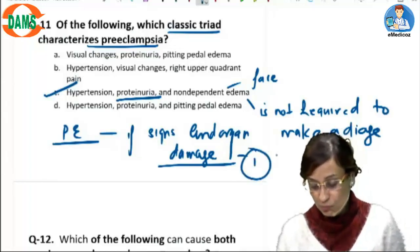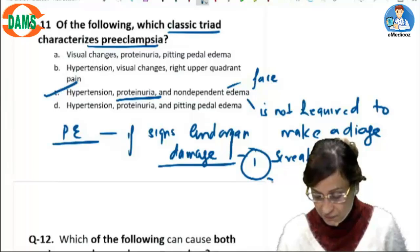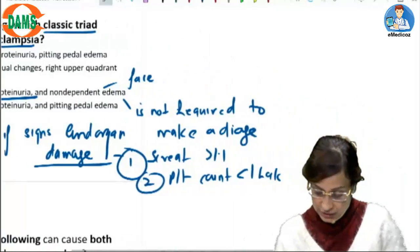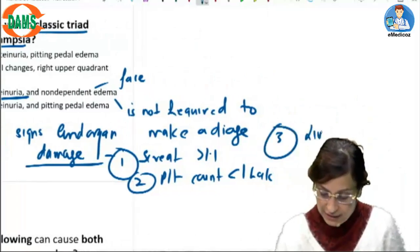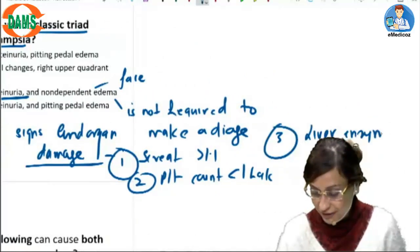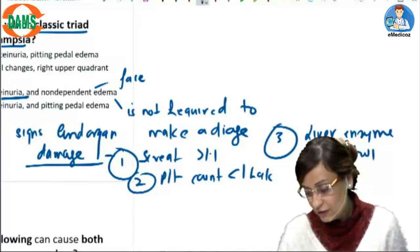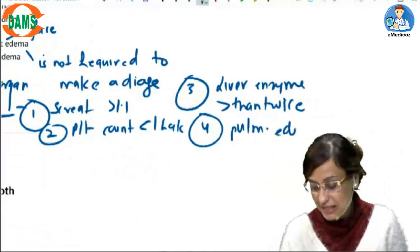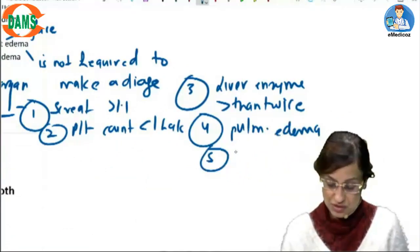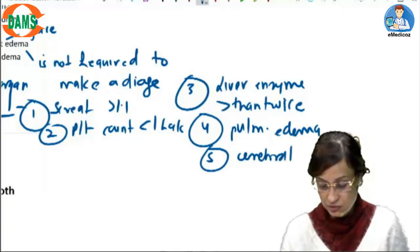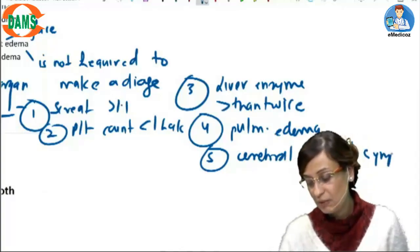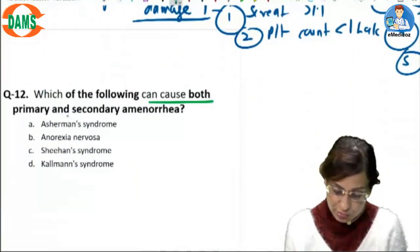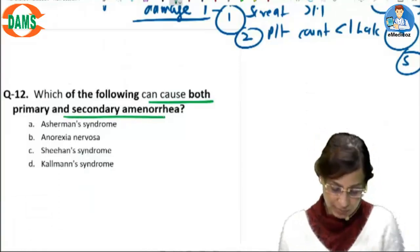Remember the five things included in end organ damage: serum creatinine more than 1.1, platelet count less than 1 lakh, liver enzymes more than twice the normal value, pulmonary edema, and finally cerebral or visual symptoms. If any of these is present along with high BP, it is still preeclampsia.